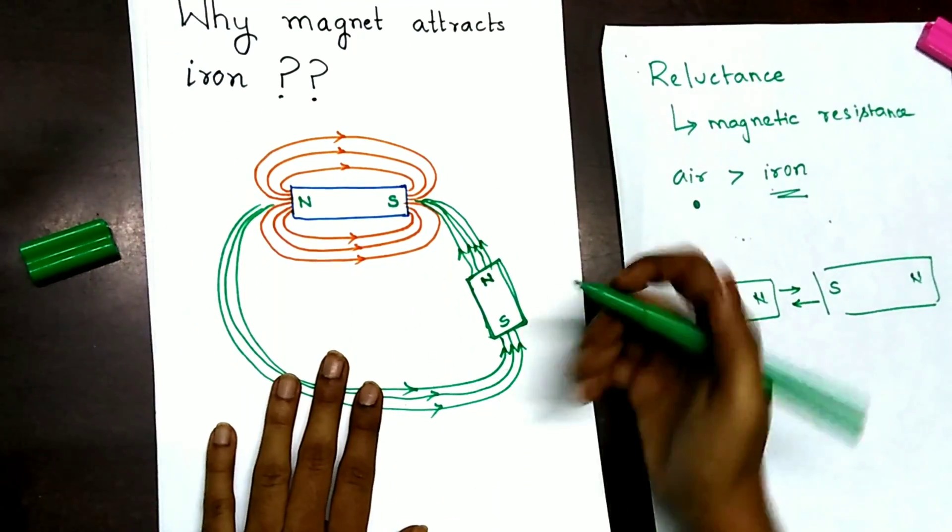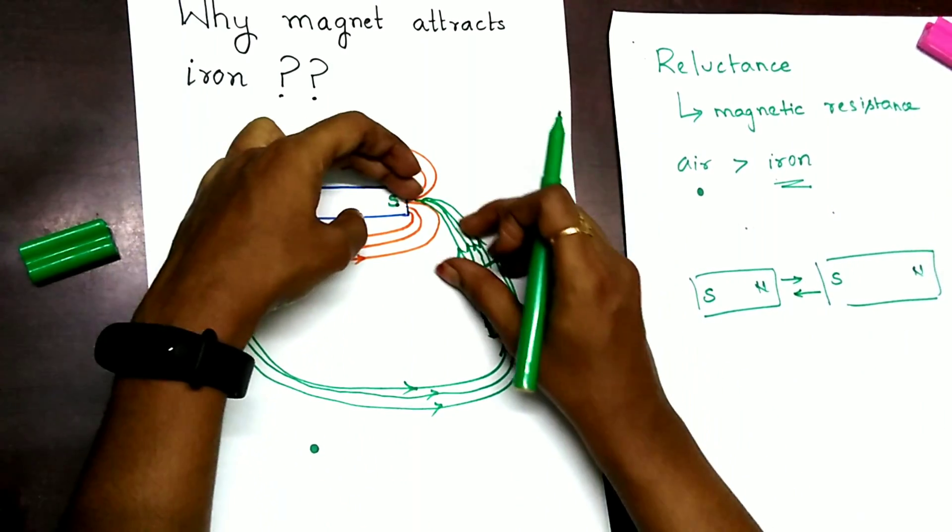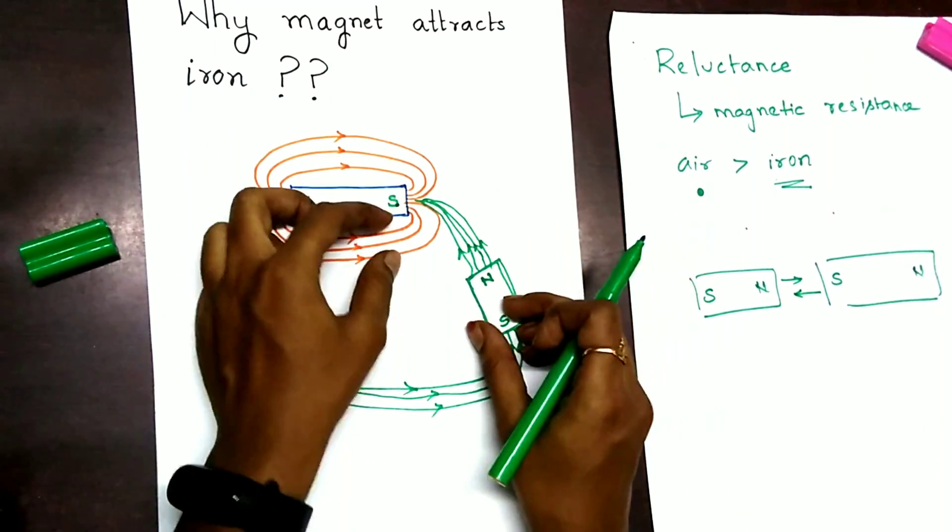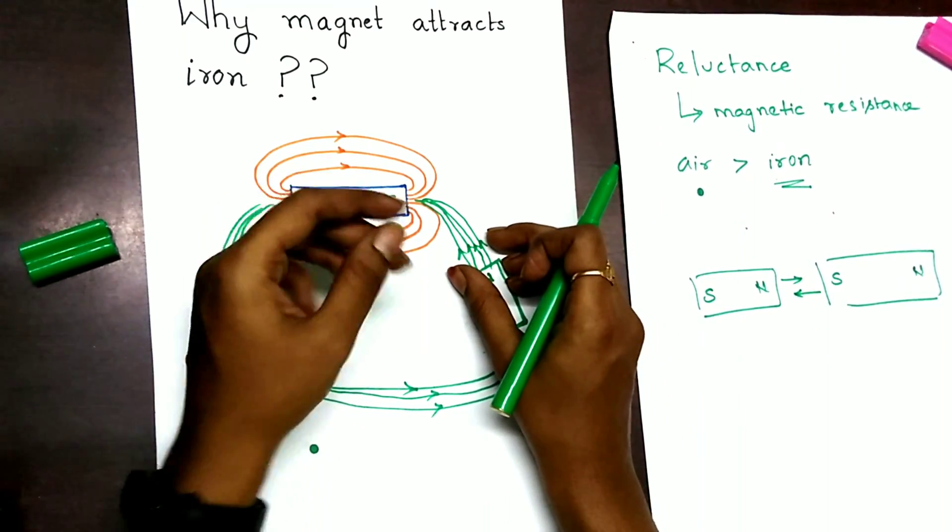Now, the same thing happens here. Since the south and north pole are placed near each other, the magnet tries to attract the iron. If this iron piece is placed nearer to the magnet, the force of attraction is more.